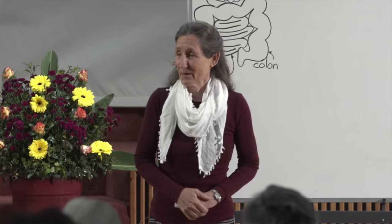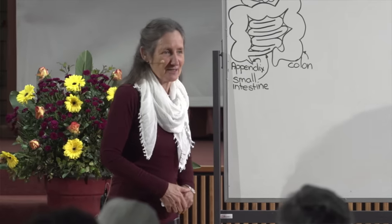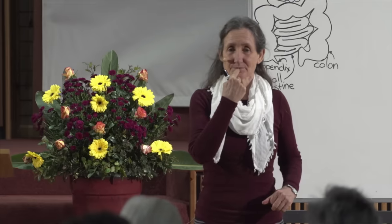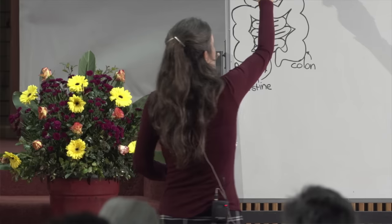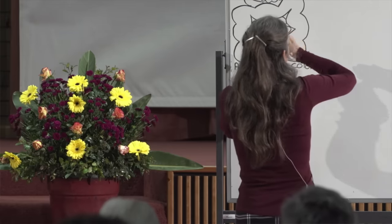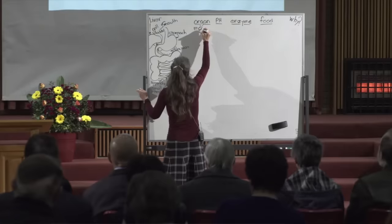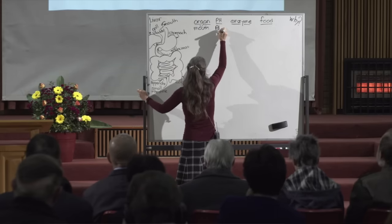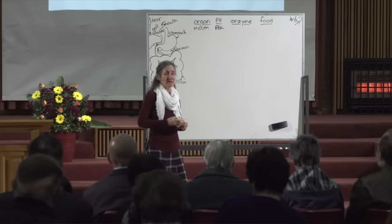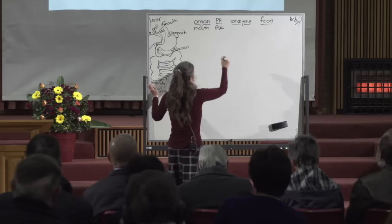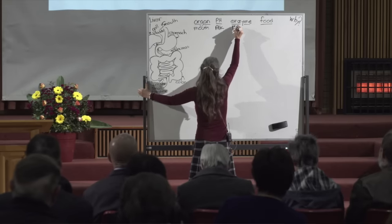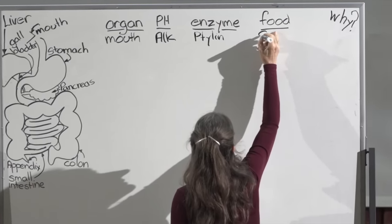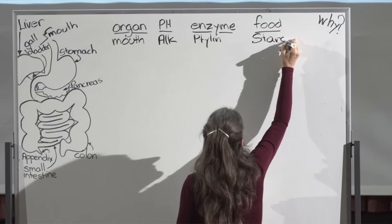Let's begin by taking you on a journey through your gastrointestinal tract. The mouth is the first organ, and most people don't realize that digestion begins in the mouth. The pH in the mouth is alkaline. One enzyme released in the mouth is Tylin, called salivary amylase, because Tylin breaks down starch — or carbohydrate. Starch is anything like bread, pasta, cereal, cakes, biscuits, potatoes.